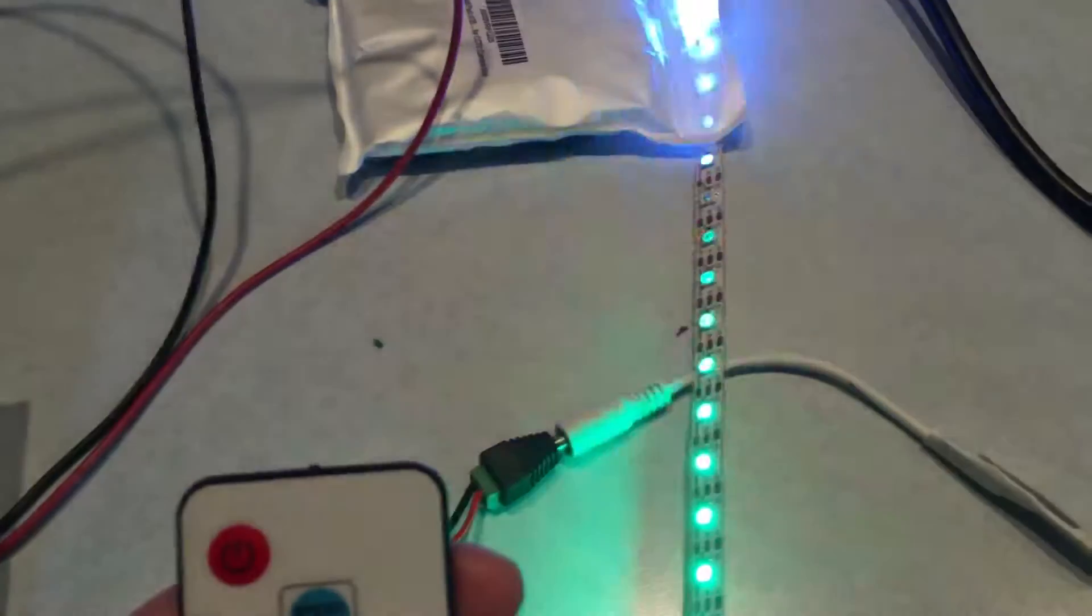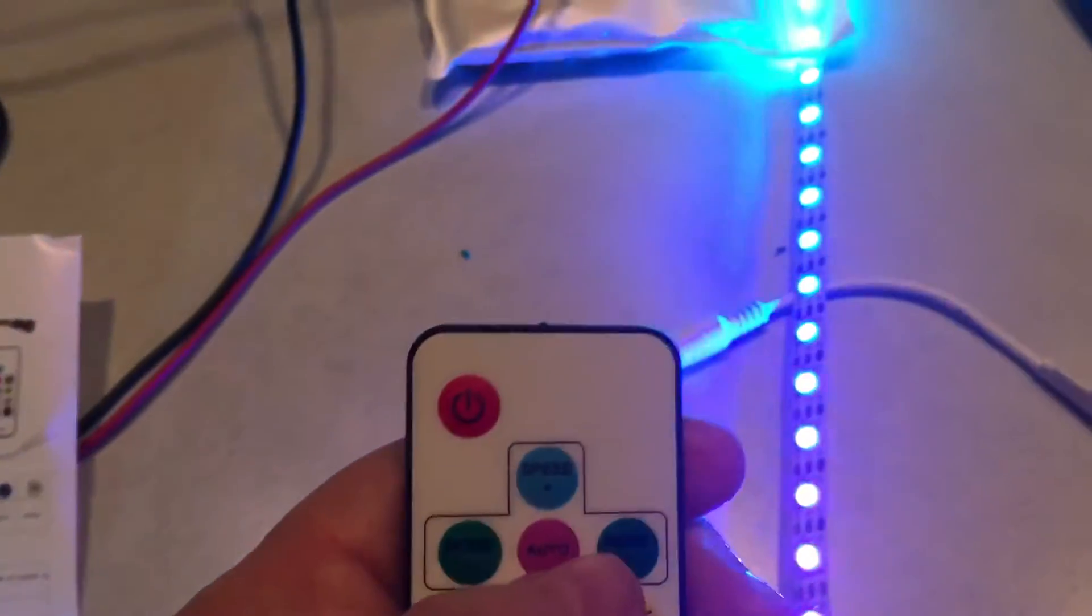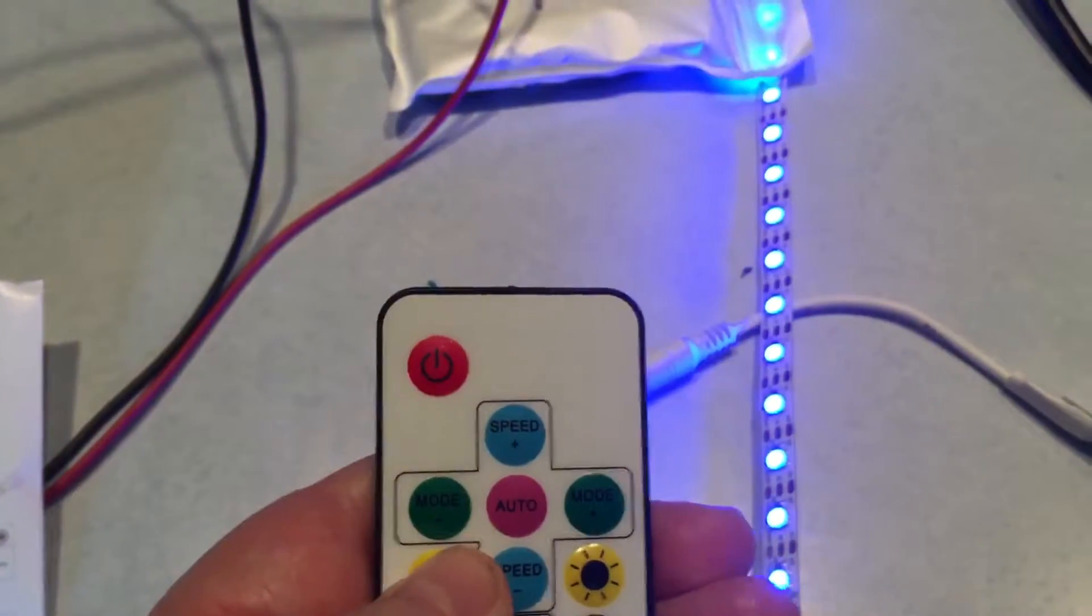If you want to go back to auto you just push the auto button, and then down below there's a brightness control so you can change the brightness. These are up or down.